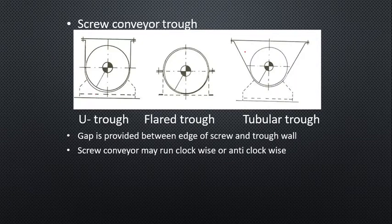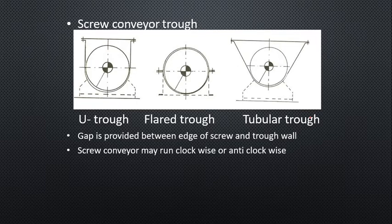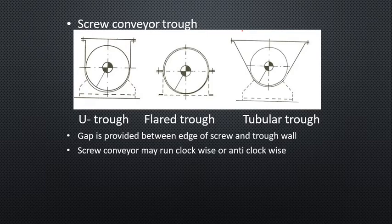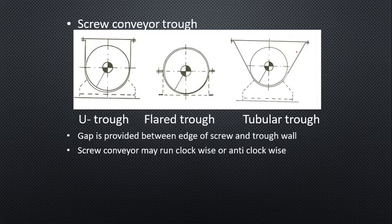The trough generally varies according to different shapes — mostly U-shaped trough, flap trough with side walls wider at the top, and tubular trough. The flap trough is generally used for conveying non-easy flowing material that may have lumps. The tubular trough is completely closed with a circular cross-section and is mostly used for conveying material at inclination or vertically.